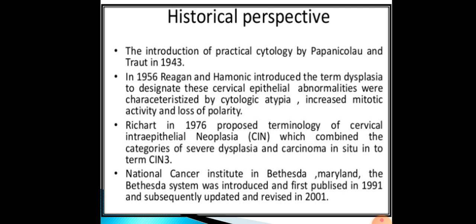In 1956, Regan and Harmonic introduced the term dysplasia to designate cervical epithelial abnormalities characterized by cytologic atypia, increased mitotic activity, and loss of polarity. Richard in 1976 proposed the terminology of cervical intraepithelial neoplasia, combining categories of severe dysplasia and carcinoma in situ into CIN 3. The National Cancer Institute's Bethesda system was introduced and first published in 1991, subsequently updated in 2001 and 2014.